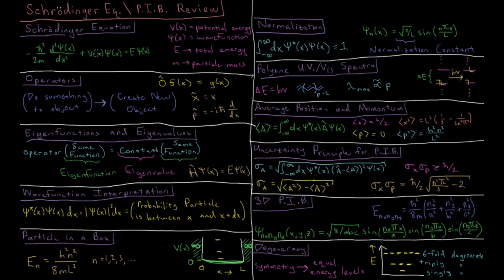Plus the potential energy V of x times psi equals the total energy times the wave function again. This is the Schrödinger equation, and this is the function that we try to solve for our wave function and for our total energy for whatever given model system we have.